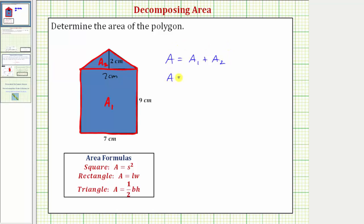So we have the total area is equal to the area of a sub one, the rectangle, which is equal to length times width, plus a sub two, the area of the triangle, which is equal to one-half base times height.